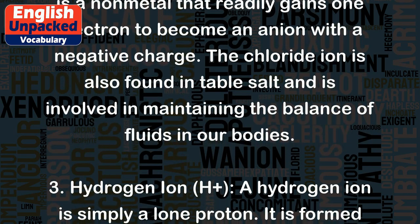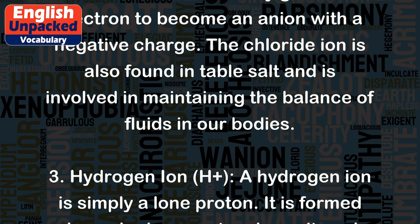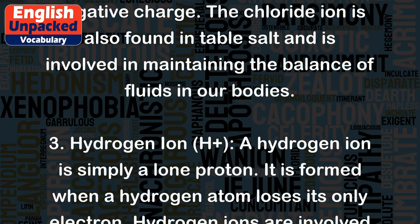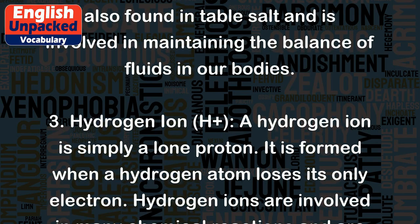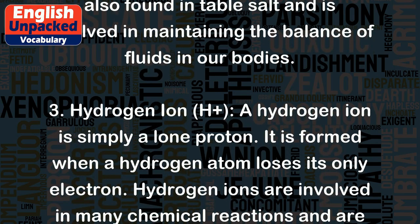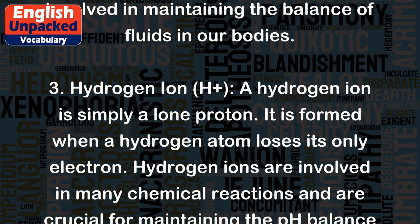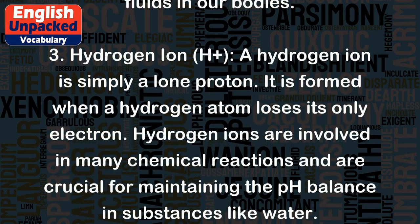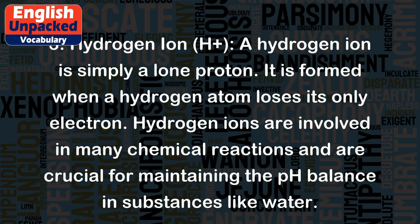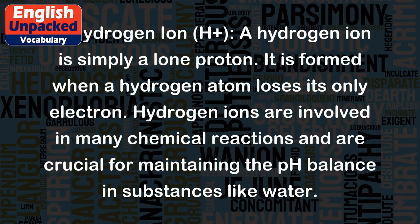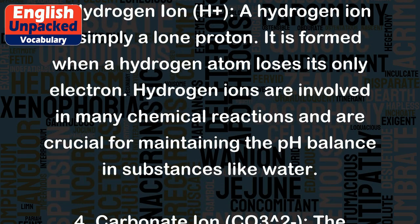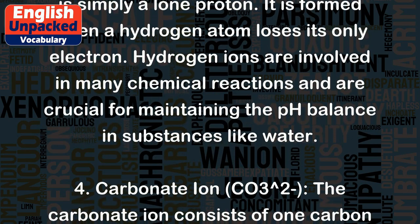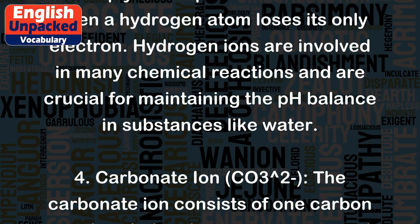3. Hydrogen ion (H+): A hydrogen ion is simply a lone proton. It is formed when a hydrogen atom loses its only electron. Hydrogen ions are involved in many chemical reactions and are crucial for maintaining the pH balance in substances like water.